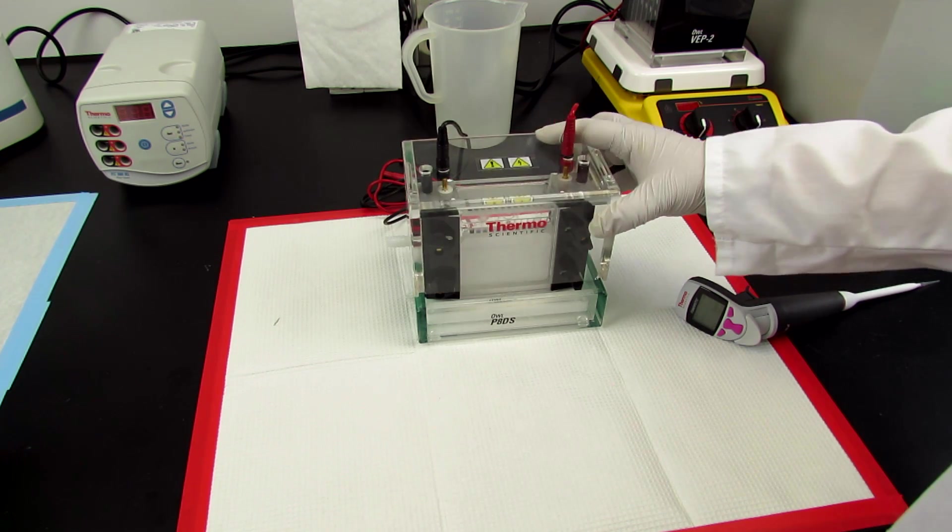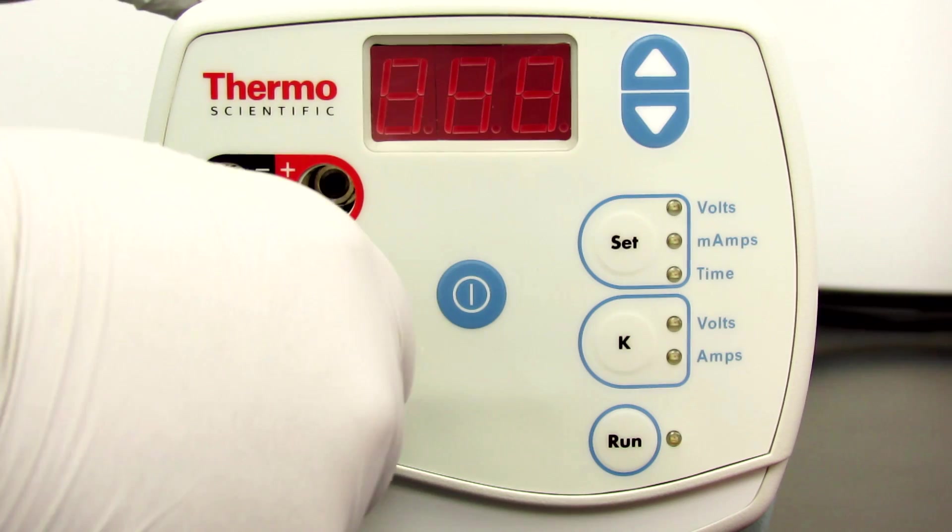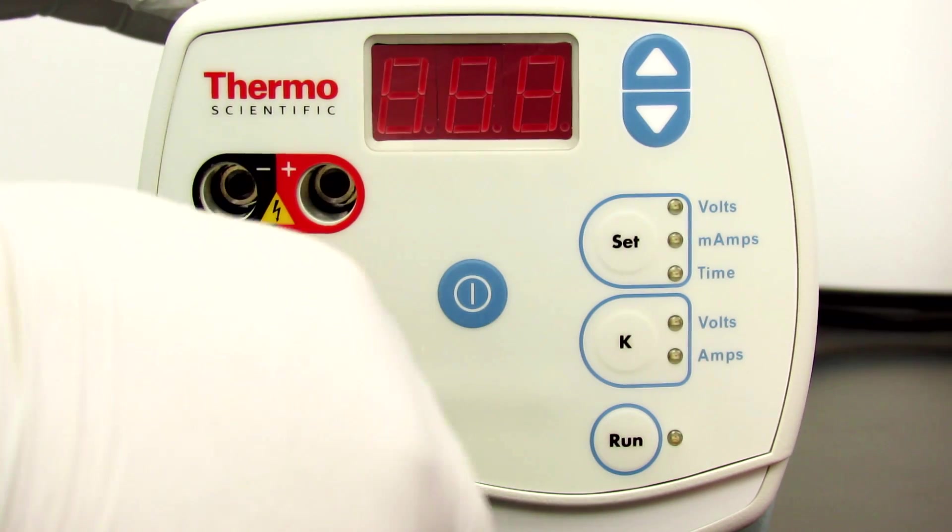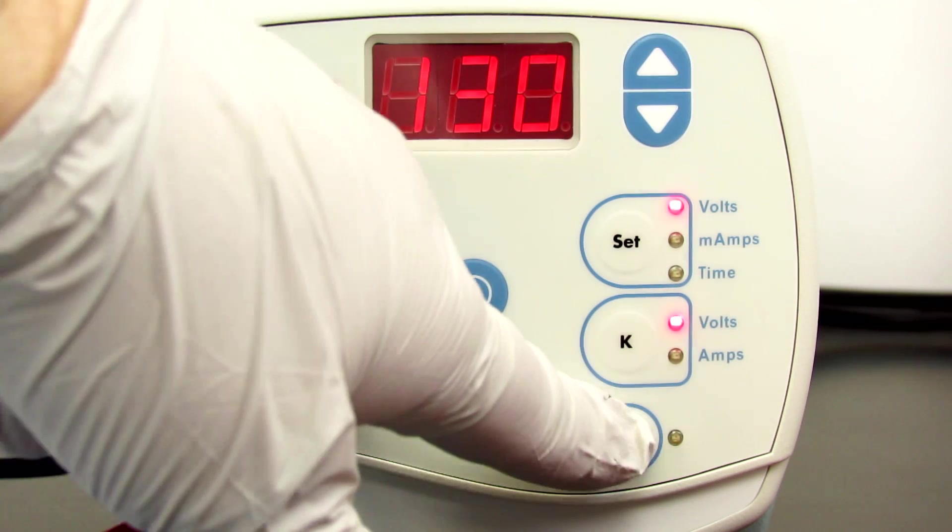Once the samples and marker are loaded, connect the electrophoresis unit to a power source, making sure that the cables are correctly connected to ensure correct protein migration. Then apply an electric field at the appropriate voltage or current, which depends on the type and number of gels being used.